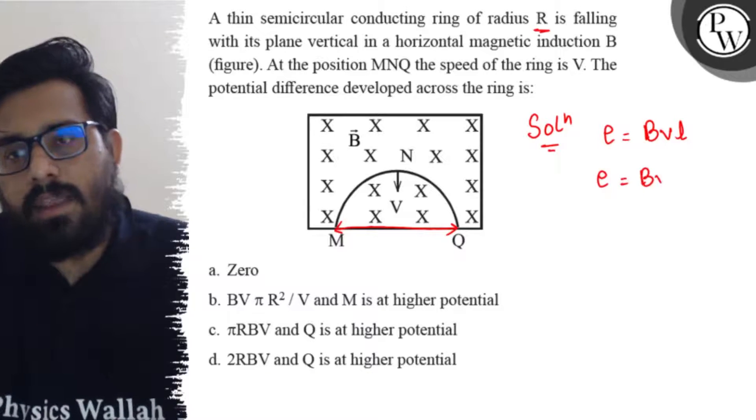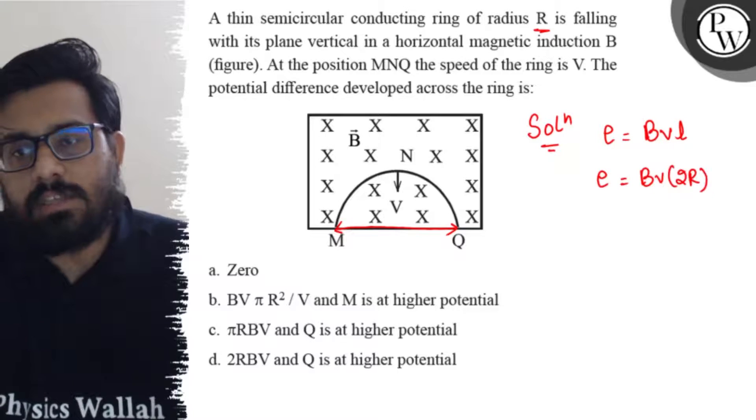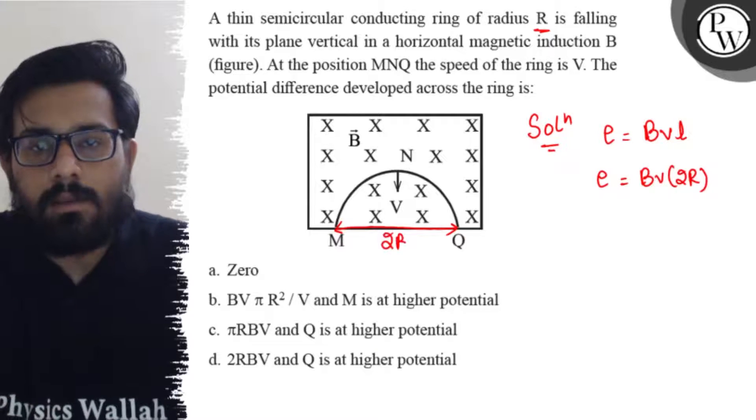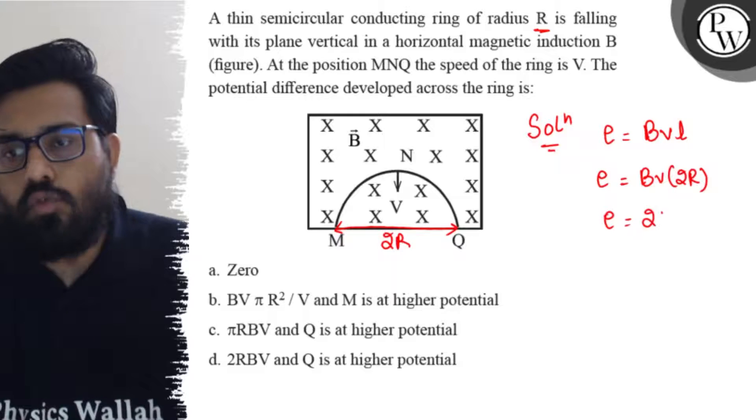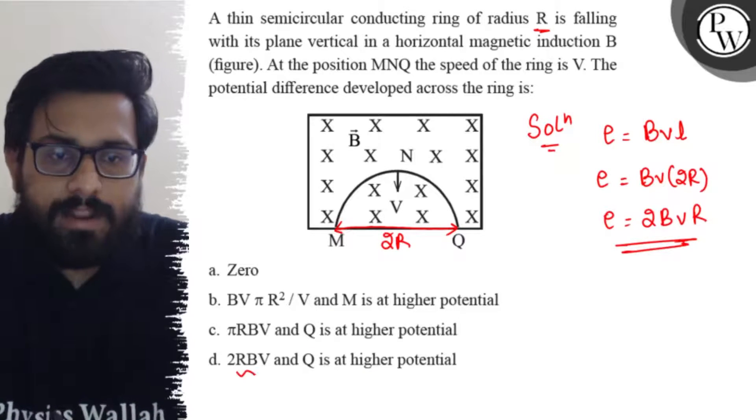So this can be written as BV into 2R, which is the shortest distance. Now, the induced EMF comes out to be 2BVR, which I'm getting in our D option.